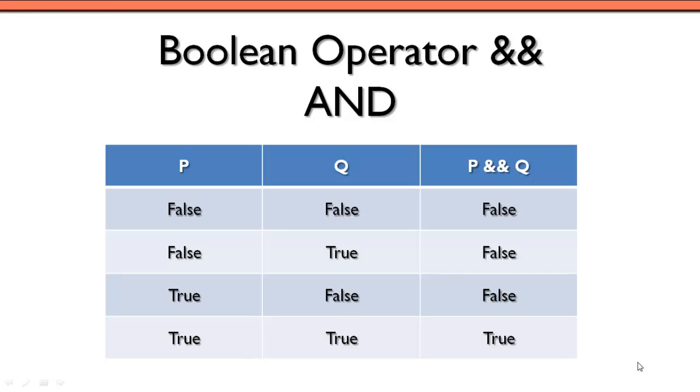Alright, so let's look at some of the Boolean operators, and the first one we're going to look at is the AND operator. And basically it says that we have to have two things being true in order for the overall expression to be true.